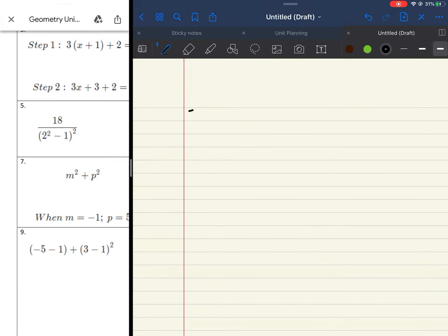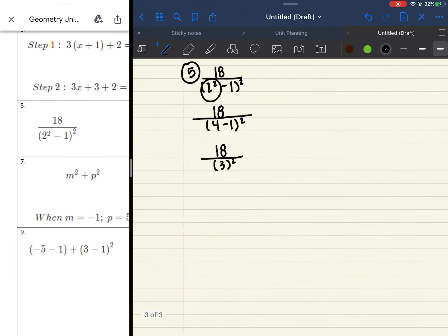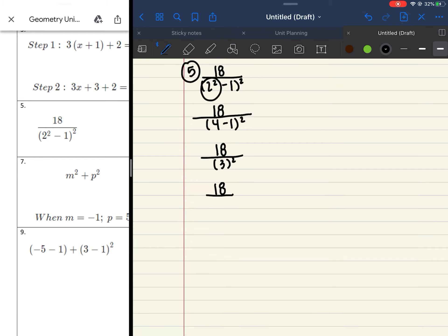So we just did number 4. We're going to move on to number 5. Number 5 is another order of operations. Remember, you always do your parentheses first. And in our parentheses, we actually have an exponent. So we're going to do 18 divided by that 2 squared is going to become 4 minus 1 squared. We still have our parentheses, so we need to do that. So we have 18 divided by 4 minus 1 gives us 3 squared. So now we have 18 over, you can do your exponent now, 3 squared gives you 9. And then your last step, 18 divided by 9 is 2.